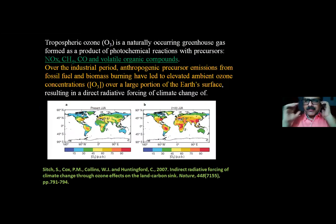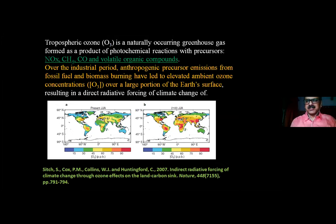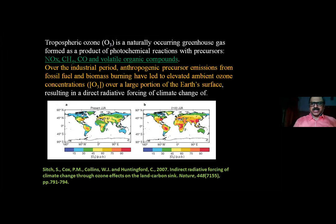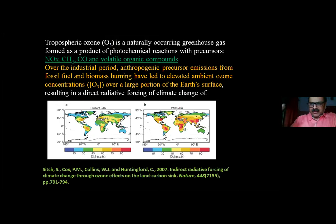Tropospheric ozone is a naturally occurring greenhouse gas formed as a product of photochemical reactions. Its precursors are oxides of nitrogen, CH₄, CO, and volatile organic compounds. Due to industrialization, anthropogenic precursor emissions from fossil fuel and biomass burning have led to elevated ambient ozone concentration over a large portion of the Earth's surface.